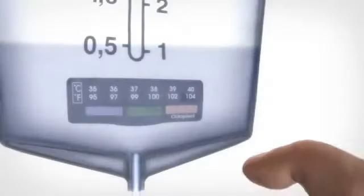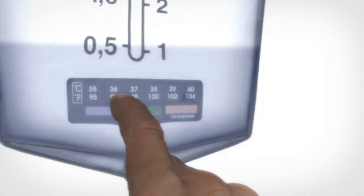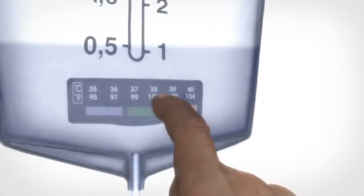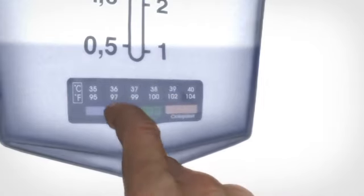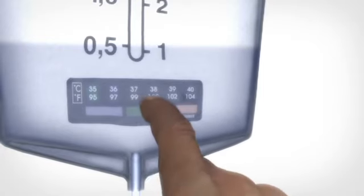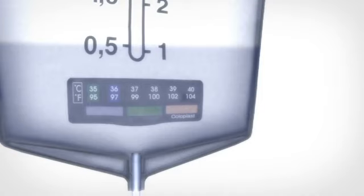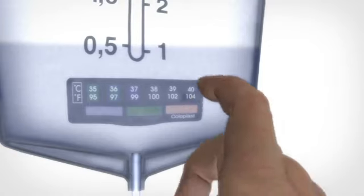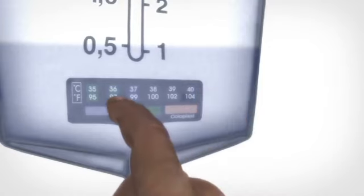The temperature of the water should be between 36 and 38 degrees Celsius. This corresponds to 97 to 100 degrees Fahrenheit. Correct temperature of the water is indicated by a mark. Regulate the temperature of the water until the reading is between 36 and 38 degrees Celsius.